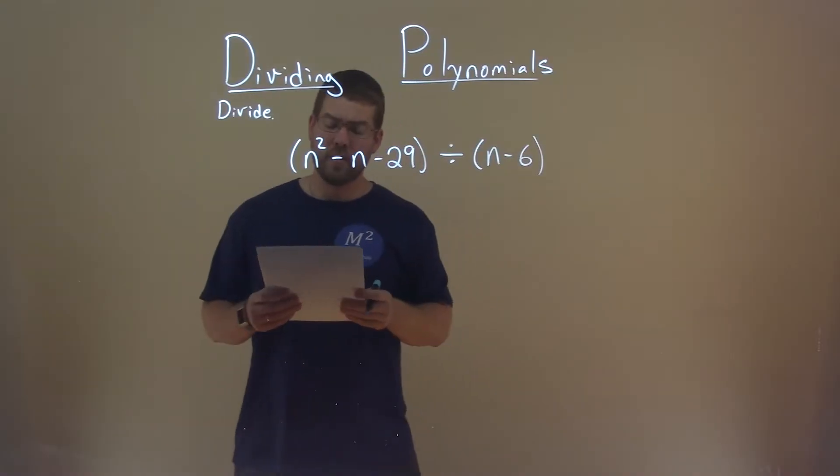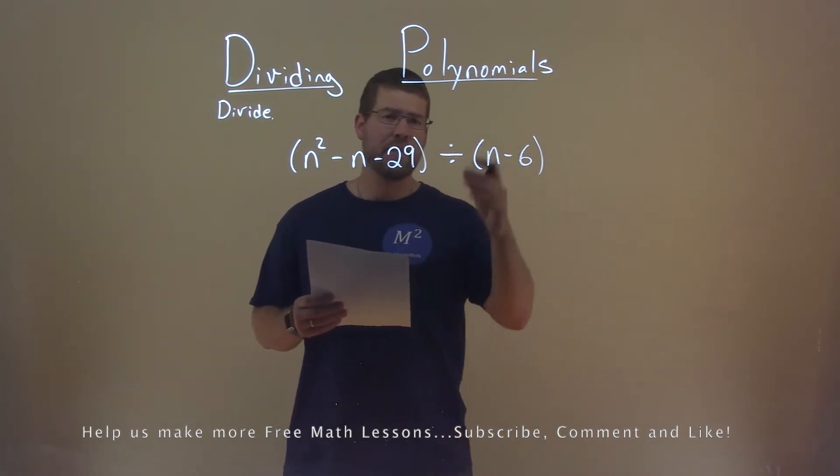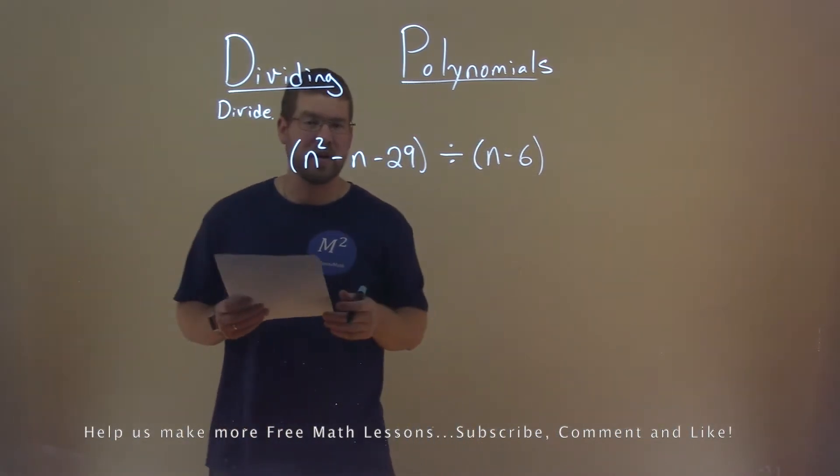We're given this problem right here, n squared minus n minus 29 divided by n minus 6, and we need to simplify this.